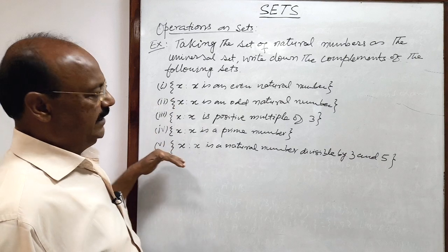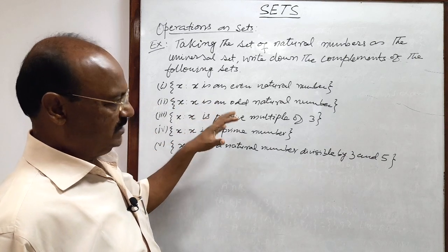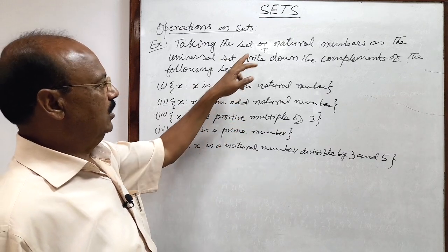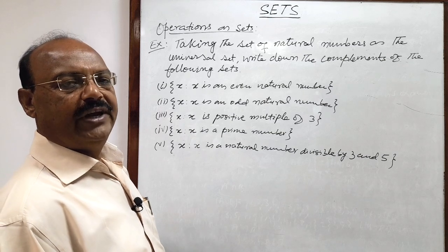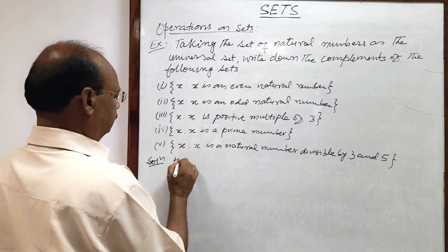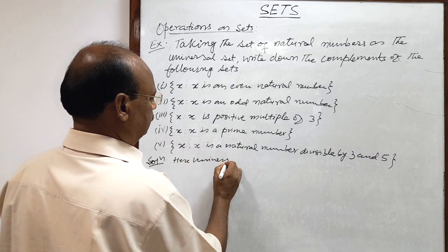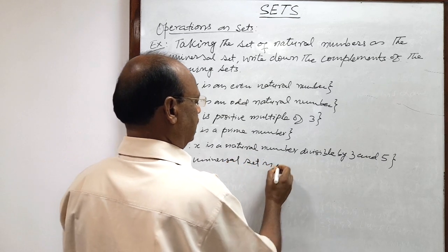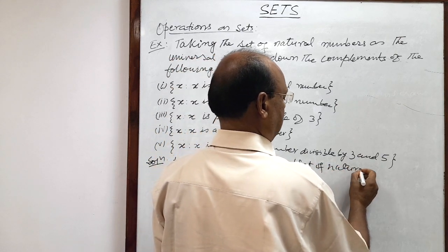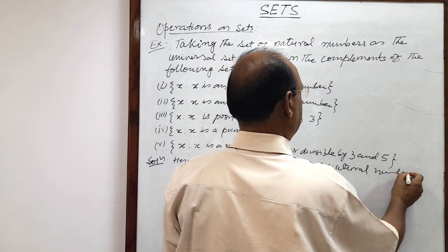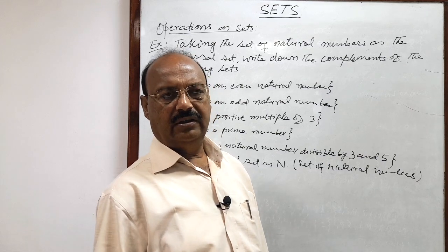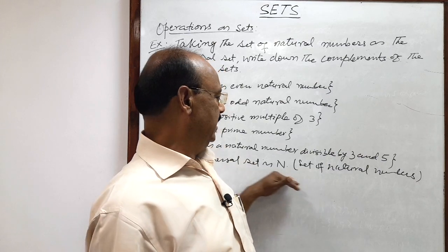There are five different types of sets, and all these sets are subsets of natural numbers because here the universal set is the set of natural numbers — U equals N. As we know, the set of natural numbers are the counting numbers starting from one up to infinity, so this is an infinite set.